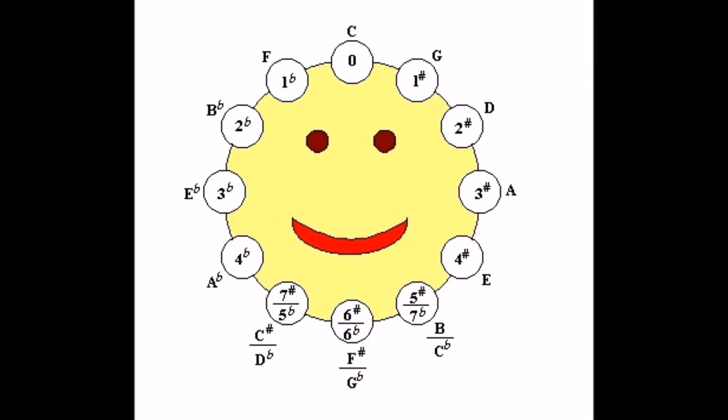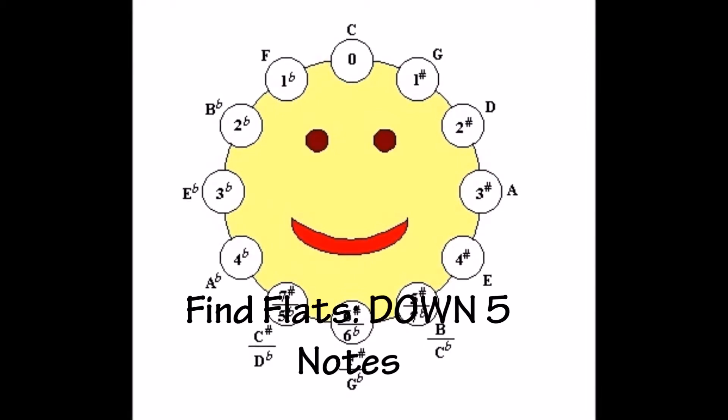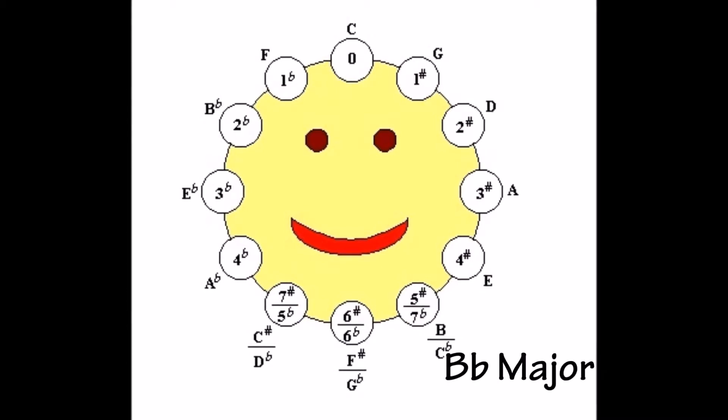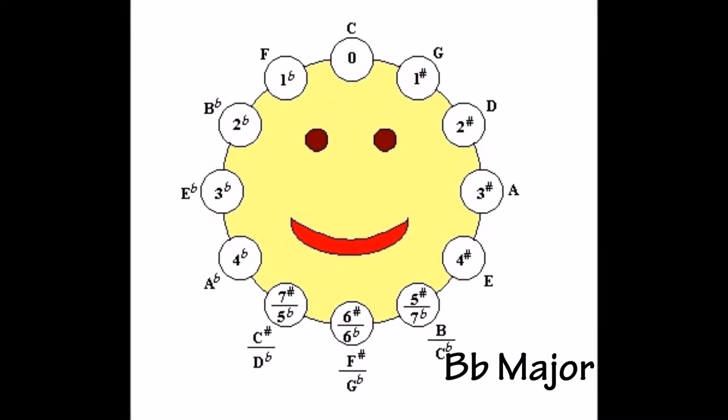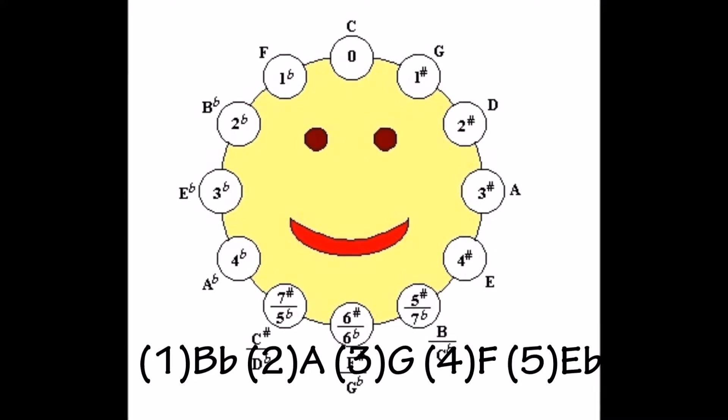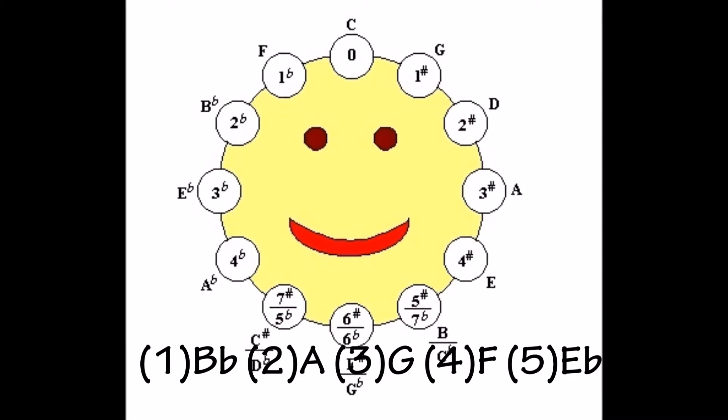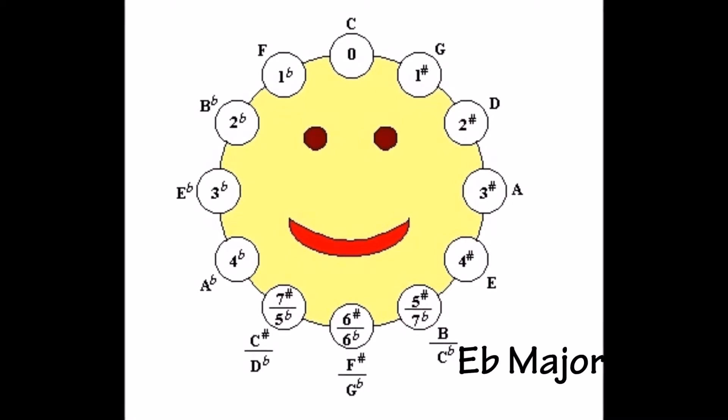On the flat side we would go down five notes. So if you want to find the next key after B flat major, which has two flats, B flat and E flat, we would begin with B flat as one, then A, G, F, and the fifth note E flat. E flat major has three flats.